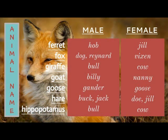A male ferret is a hob, a female ferret is a jill. A male fox is a dog or a reynard, a female fox is a vixen. A male giraffe is a bull, a female giraffe is a cow.